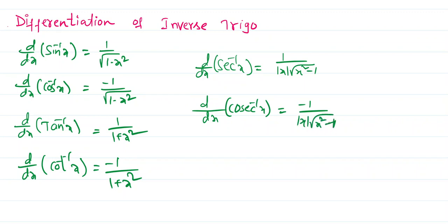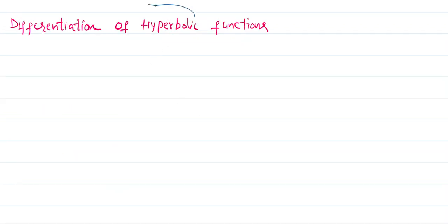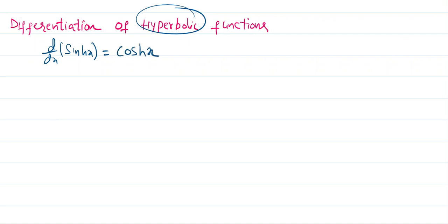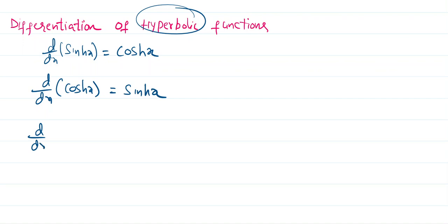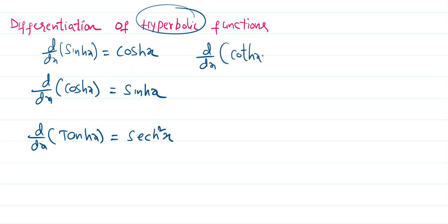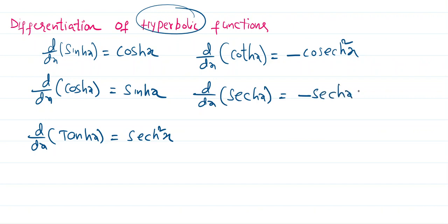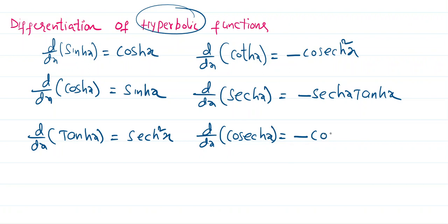Differentiation of hyperbolic functions: d/dx of sinh x is equal to cosh x. d/dx of cosh x is equal to sinh x. d/dx of tanh x is equal to sech²x. d/dx of coth x is equal to -cosech²x. d/dx of sech x is equal to -sech x·tanh x. d/dx of cosech x is equal to -cosech x·coth x. These six are the differentiation formulas of hyperbolic functions.